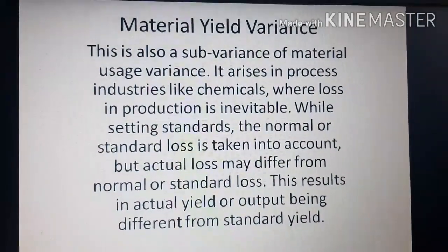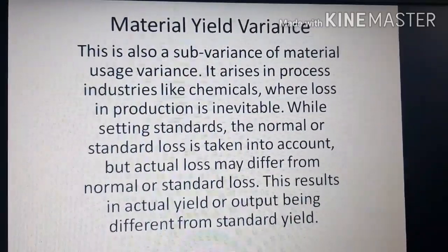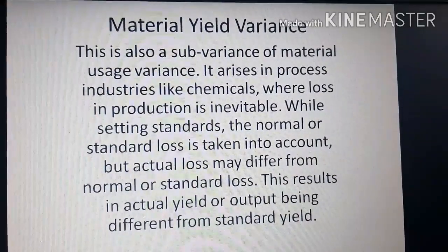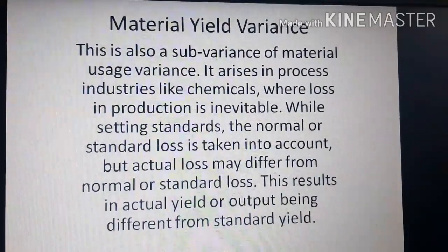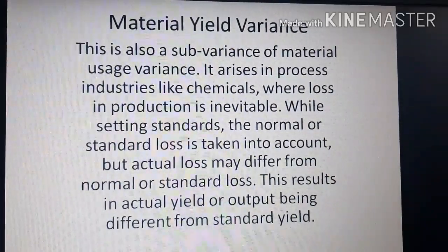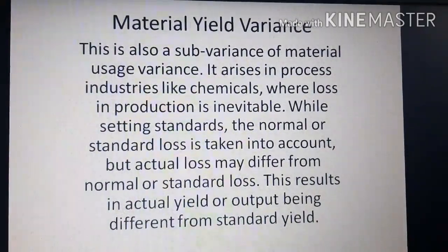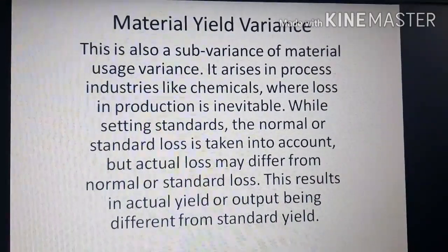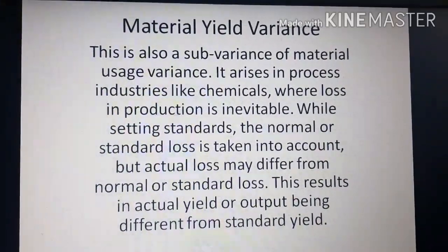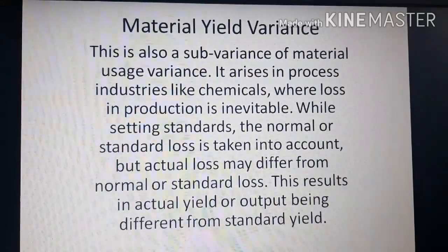Material yield variance. This is a sub-variance of material usage variance. It arises in process industries like chemicals where loss in production is inevitable. While setting standards, the normal or standard loss is taken into account, but actual loss may differ from normal or standard loss. This results in actual yield or output being different from standard yield.